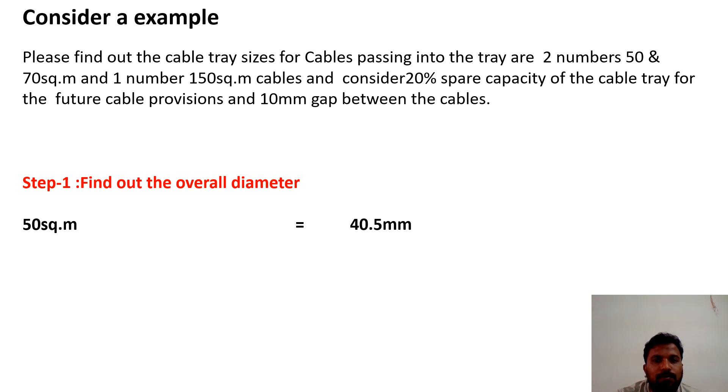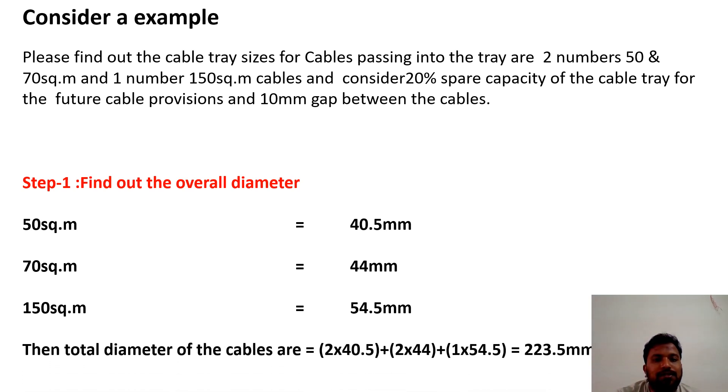These values vary from the manufacturers like Ducab, National Cables, Oman Cables, Riyadh Cables. Different types of cables are manufactured with different diameters. Which cables you are choosing? Select the same cable manufacturing chart and take the values from that one. 50 square mm is 40.5mm, 70 square mm is 44mm, and 150 square mm is 54.5mm.